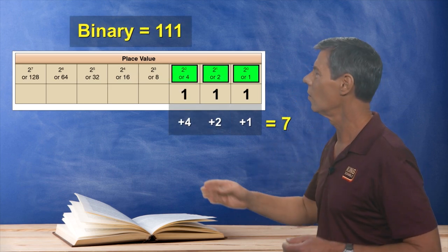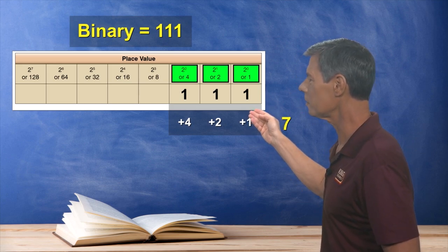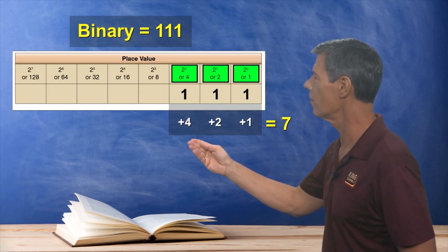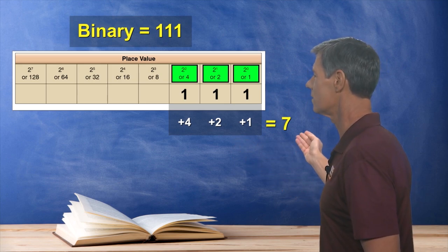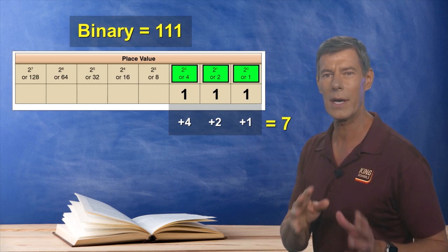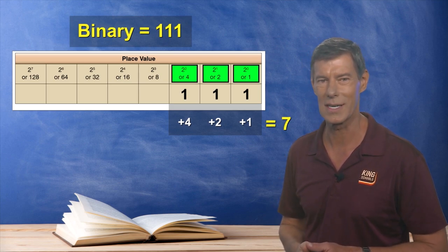Now if we had one, one, one, we'd look at all three of these place values and add up four, two, and one, giving us a value of seven. You see, all we have to do is use the chart here to make this process pretty easy.